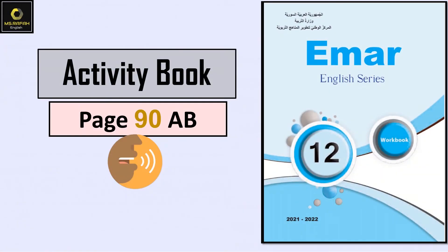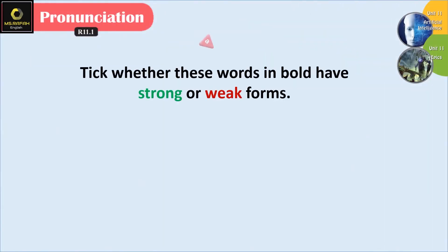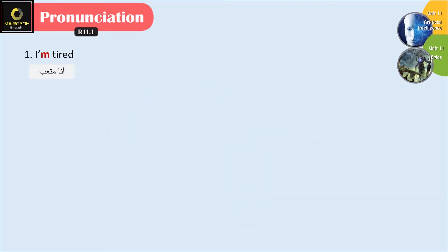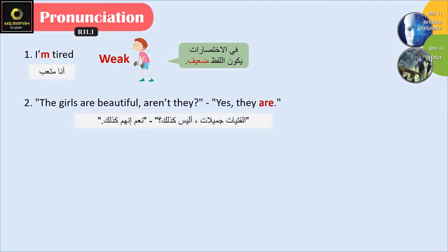Now let's move on to the activity book, page 90. Question A: tick whether the words in bold have strong or weak forms. 'I'm tired' — 'I'm' is a contraction, so it's weak. 'The girls are beautiful, aren't they?' 'Yes, they are' — the 'are' in the short answer is strong.